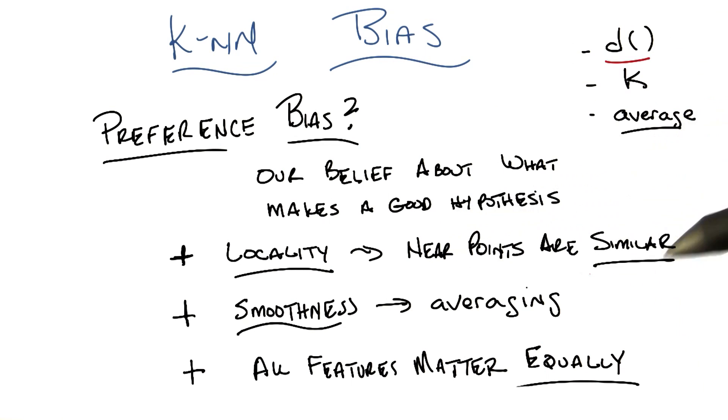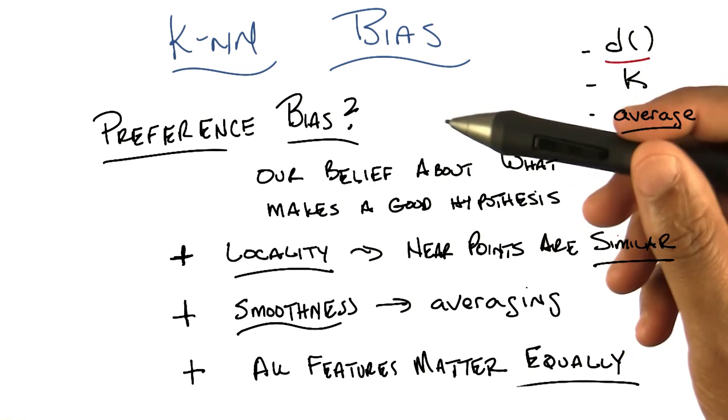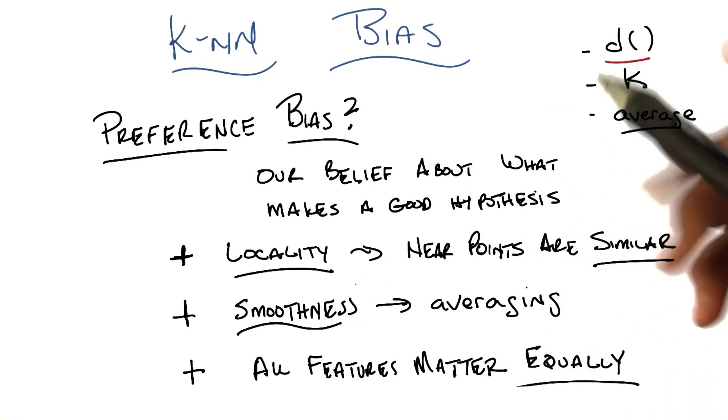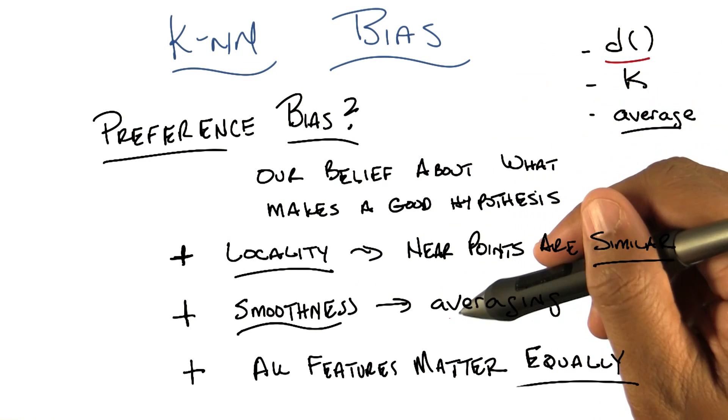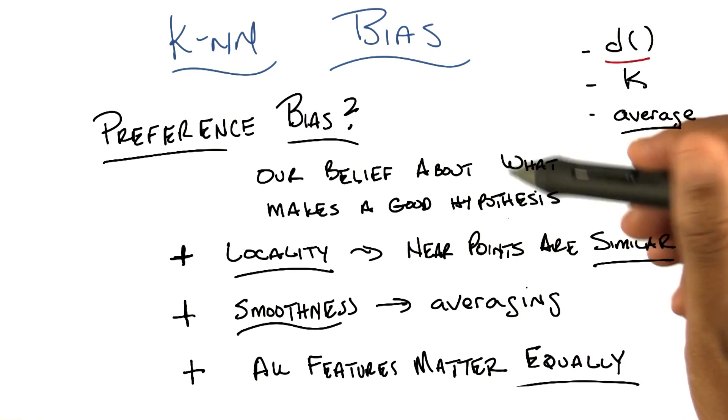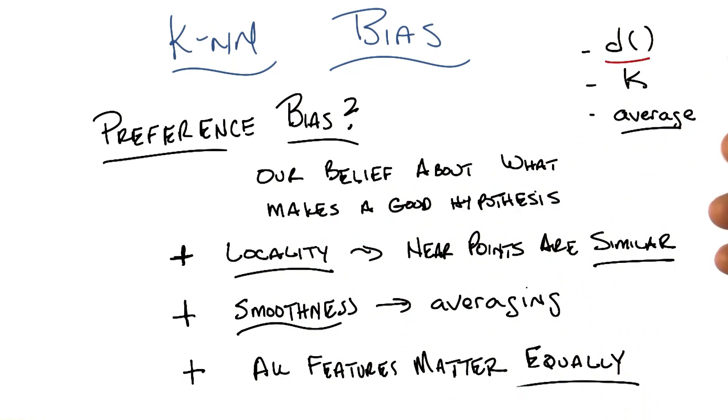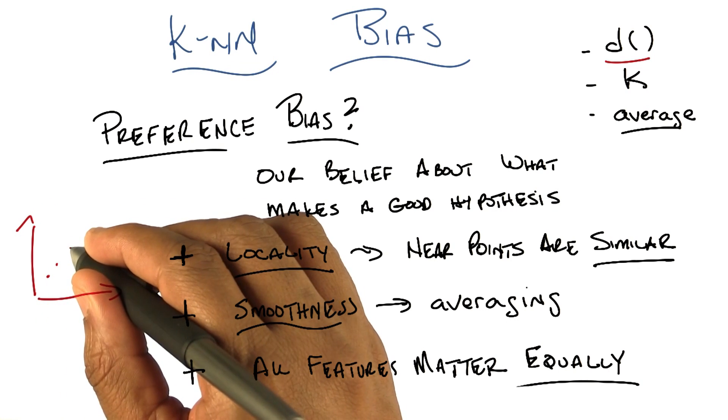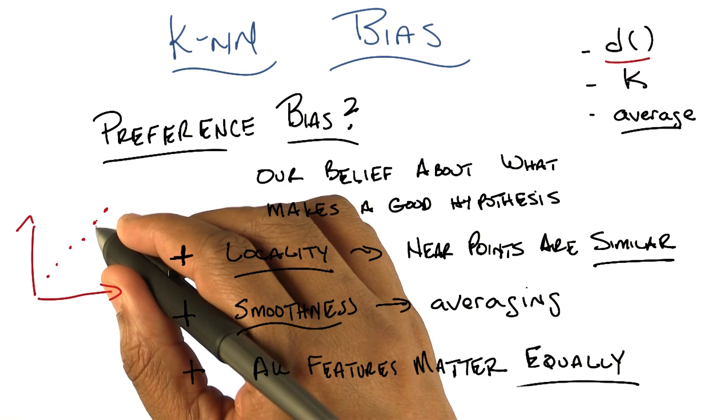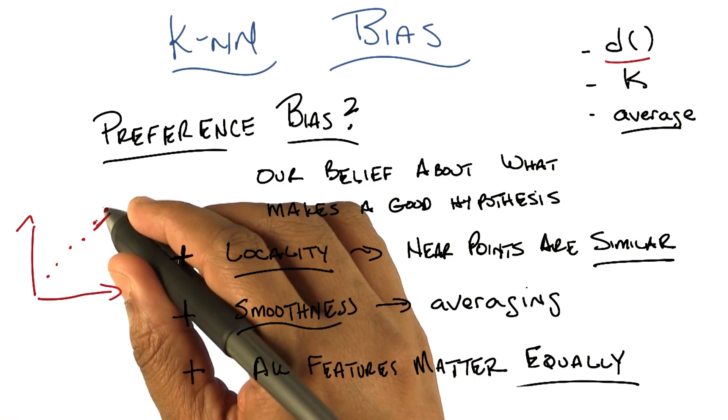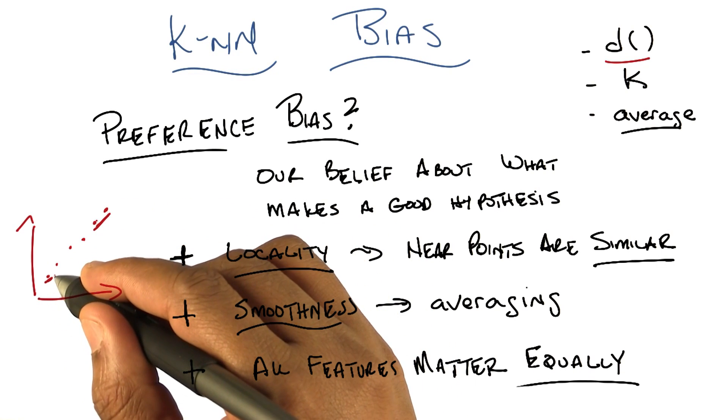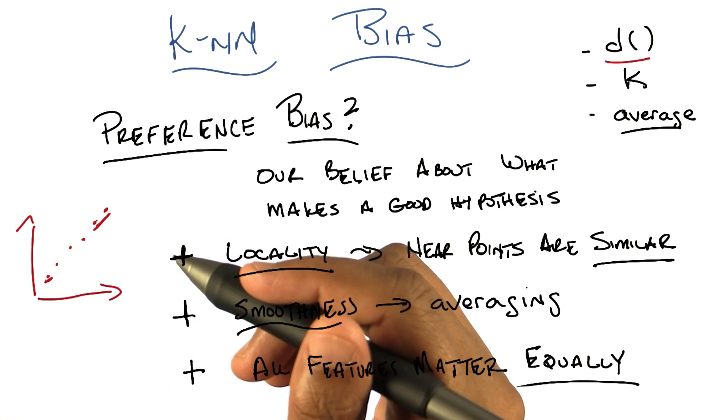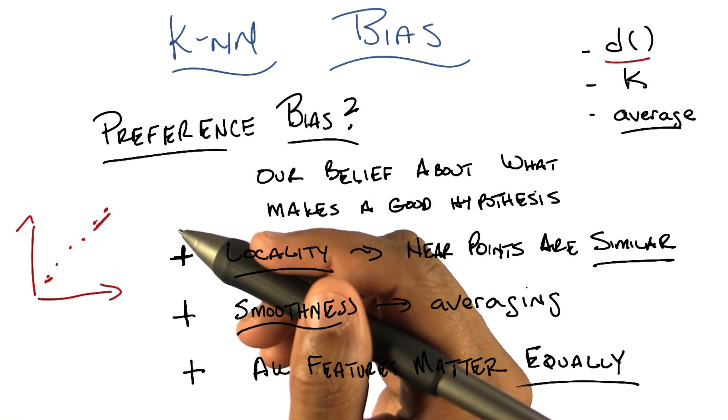Yeah, that sounds right. Okay. So, locality, however it's expressed through the distance function, that is similarity, is built into KNN that we believe that near points are similar, kind of by definition. That leads actually to the second preference bias, which is this notion of smoothness. Right? That we are, by choosing to average, and by choosing to look at points that are similar to one another, we are expecting functions to behave smoothly. Right.